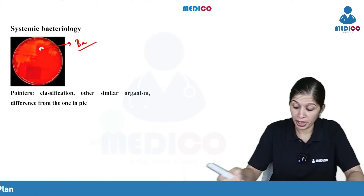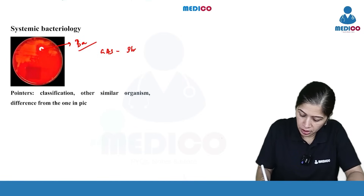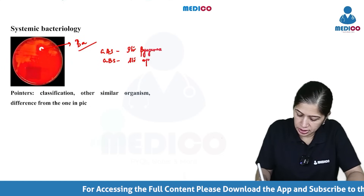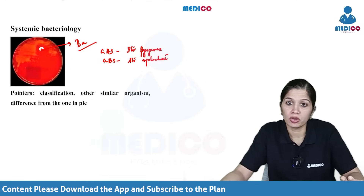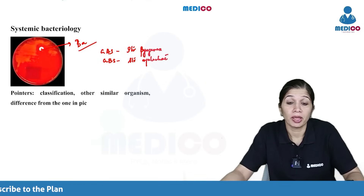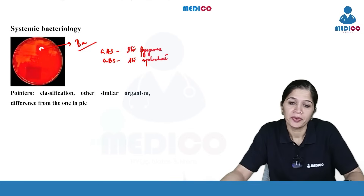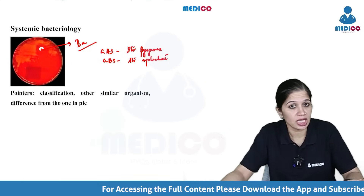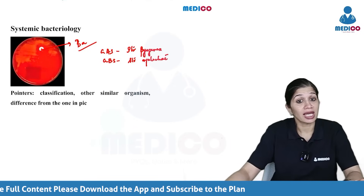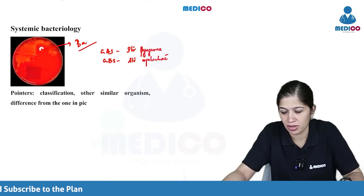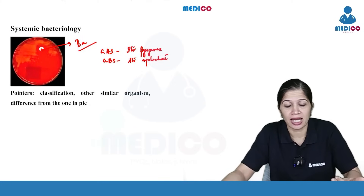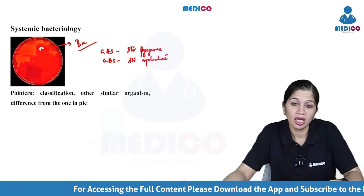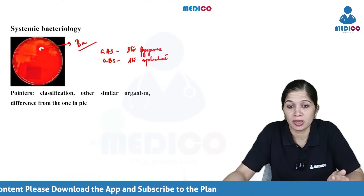Strep pyogenes is otherwise known as Group A strep, and Strep agalactiae is known as Group B strep. Streptococci are grouped based on the carbohydrate C antigen — that's called Lancefield grouping — and typed into Griffith types based on the M protein. So, based on bacitracin sensitivity: if sensitive, it is Streptococcus pyogenes; if resistant, it is Streptococcus agalactiae, identified by CAMP test and hippurate hydrolysis.